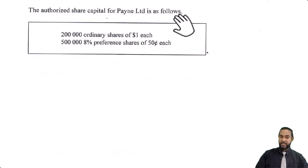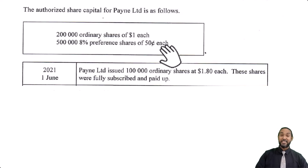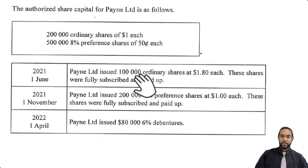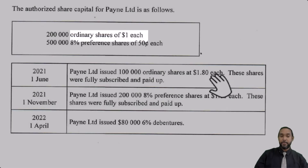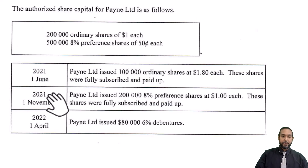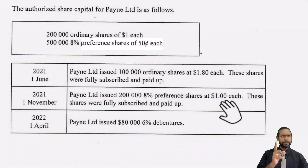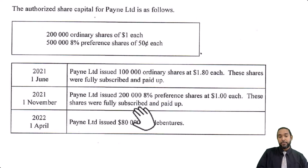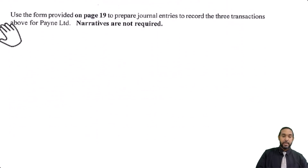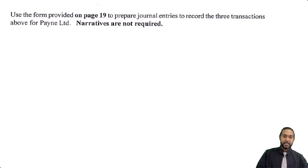The authorized share capital for Payne Limited is as follows: 200,000 ordinary shares of $1 each, and 500,000 8% preference shares of $0.50 each. On the 1st of June 2021, Payne Limited issued 100,000 ordinary shares for $1.80 each — that's 80 cents over the par value of $1, so there's a share premium. The shares were fully subscribed and paid up. On the 1st of November, Payne Limited issued 200,000 8% preference shares at $1 each — also at a premium since par value was $0.50. On the 1st of April 2022, Payne Limited issued $80,000 worth of 6% debentures. We are asked to prepare journal entries to record these three transactions. No narratives are required. The format provided is a basic general journal with date, details, folio, debit, and credit columns, worth six marks.